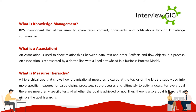What is an association in Appian? An association is used to show relationships between data, text, and other artifacts and flow objects in a process. It is represented by a dotted line with an arrowhead in a business process model. What is a measures hierarchy? It is a hierarchical tree that shows how organizational measures, pictured at the top or left, are subdivided into more specific measures for value chains, processes, sub-processes, and ultimately activity goals. For every goal there are measures that test whether the goal is achieved.